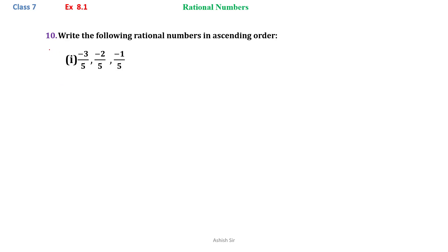Exercise 8.1, question number 10: write the following rational numbers in ascending order. We see that minus 3 by 5, minus 2 by 5, and minus 1 by 5 — three rational numbers are given to us.